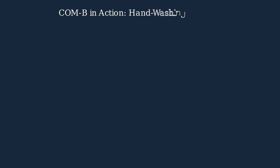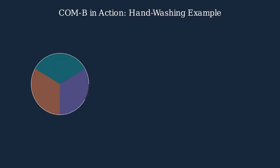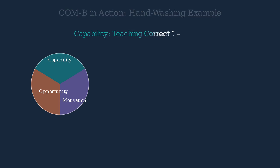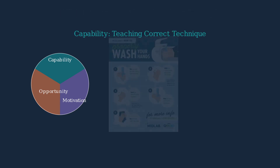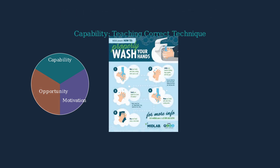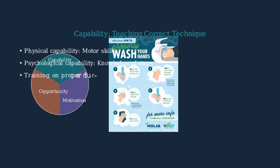Let's see the COM-B model in action with a practical example: hand washing. First, we must address capability. This involves teaching the correct hand washing technique, ensuring people have both the physical skills and knowledge to wash hands effectively.